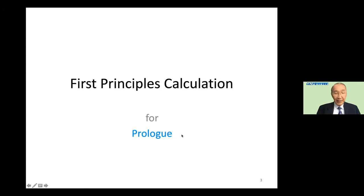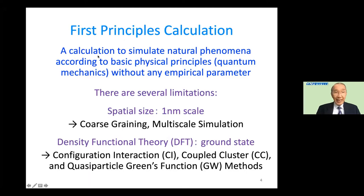First principle calculation is a calculation to simulate natural phenomena according to basic physical principles, in particular quantum mechanics, without any empirical parameter. However, there are several limitations. First of all, there is a spatial size limit — the first principle calculation is mostly limited to the size of one nanometer scale. If we want to simulate larger scales beyond this, we have to use coarse-graining or multi-scale simulation techniques.